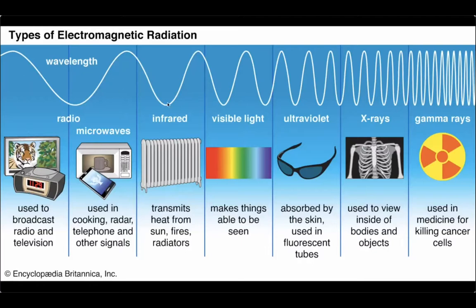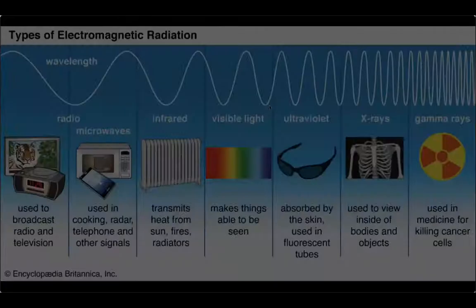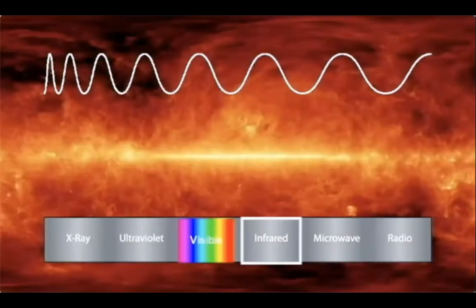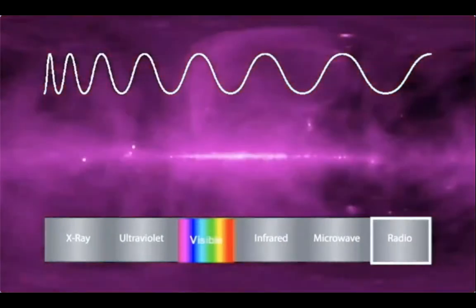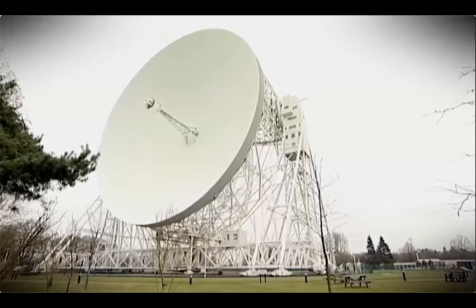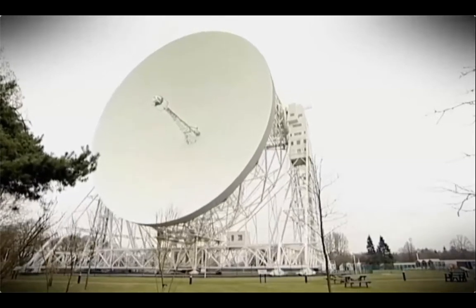Every single one of these wavelengths of the electromagnetic spectrum has some sort of use in our everyday lives. Another wonderful way the electromagnetic spectrum has helped us is by giving us a better view of the deepest parts of the universe. Since we can only perceive visible light, we are often clouded by nebulas, stars, and galaxies. However, using electromagnetic radiation, we have been able to build telescopes that use radio waves and X-rays to peer into the deepest parts of space.